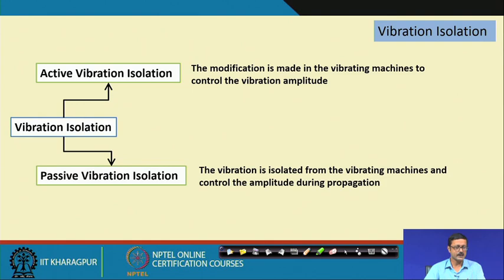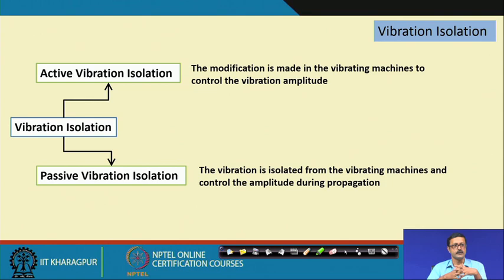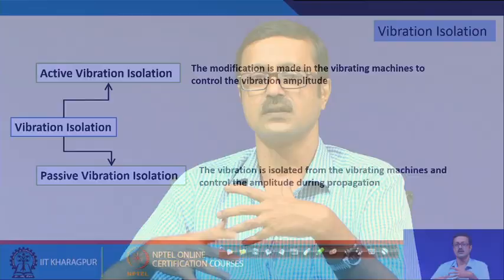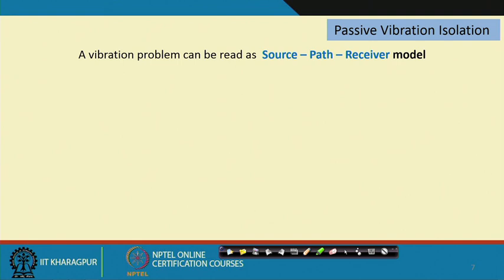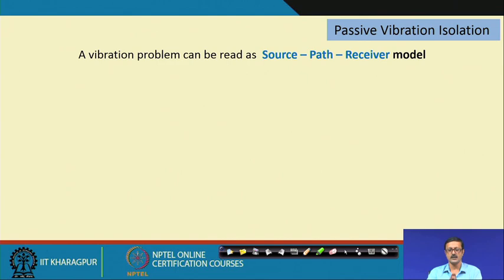The second classification is passive vibration isolation, where the architect has a much bigger role. Here, the vibration is isolated during the propagation stage. The architect does not touch the machine itself, but thinks about how propagation is minimized from source room to receiving room through changes in building and structural configuration.